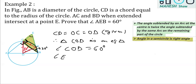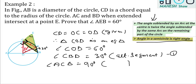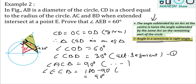From the alternate segment theorem, angle CBD equals 30 degrees — call this equation 1. Since AB is the diameter, angle ACB equals 90 degrees by the angle in a semicircle. Applying linear pair, angle ECB equals 180 minus 90, which equals 90 degrees — call this equation 2.